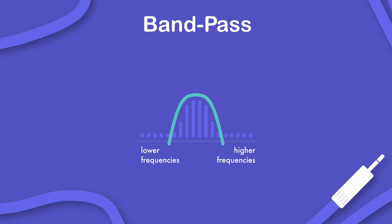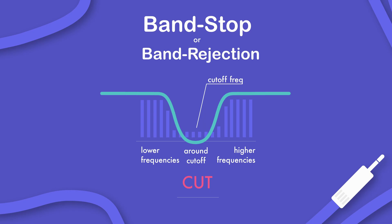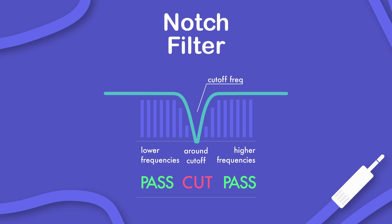A band pass filter passes the frequencies around its cutoff frequency and attenuates the frequencies above and below it. A band stop, or band rejection filter, is the opposite — it attenuates the frequencies around its cutoff frequency and lets all of the frequencies above and below it pass. A very aggressive band stop filter is also referred to as a notch filter.